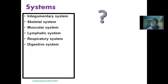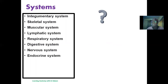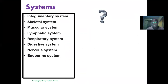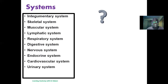We have the digestive system, which is involved in the breaking down of food substances. We have the nervous system, which includes the central nervous system and the peripheral nervous system, involved in the transmission and interpretation of impulses and execution of actions. We have the endocrine system, which involves the secretion of hormones that help to control body metabolic activities. We have the cardiovascular system, made up of the heart and vessels, responsible for pumping and transportation of blood.